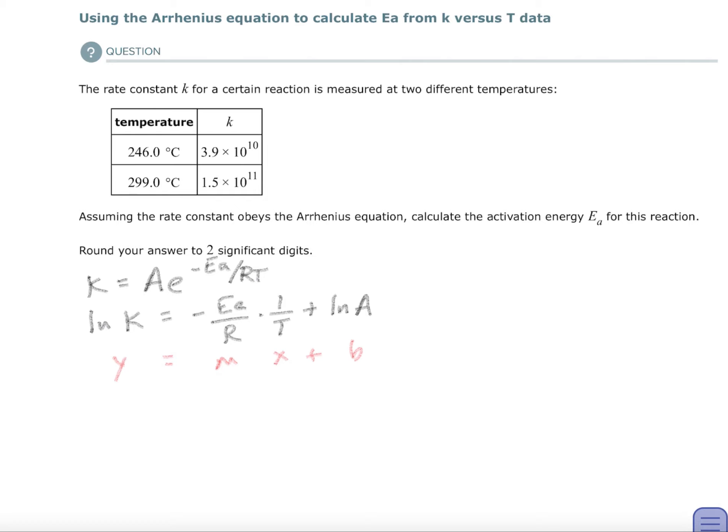Now your slope, remember, is m here. And m, if you look above it, is negative activation energy divided by R. And R is just a constant. So if I can find the slope, I can set it equal to the negative Ea over R and solve for activation energy. And that's what we're going to do today.